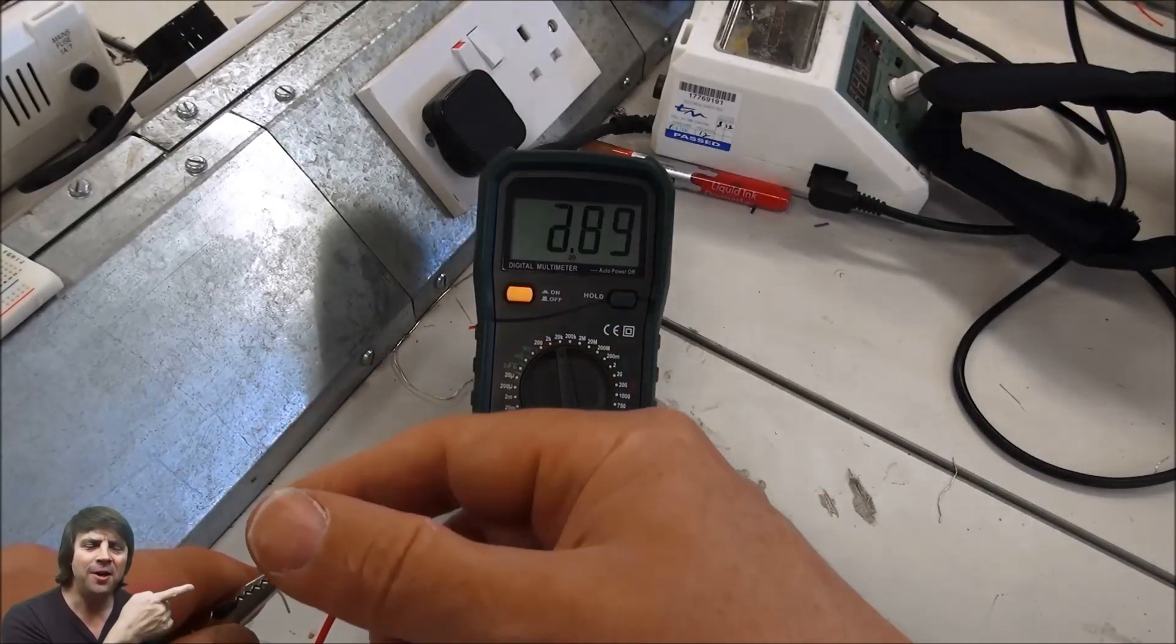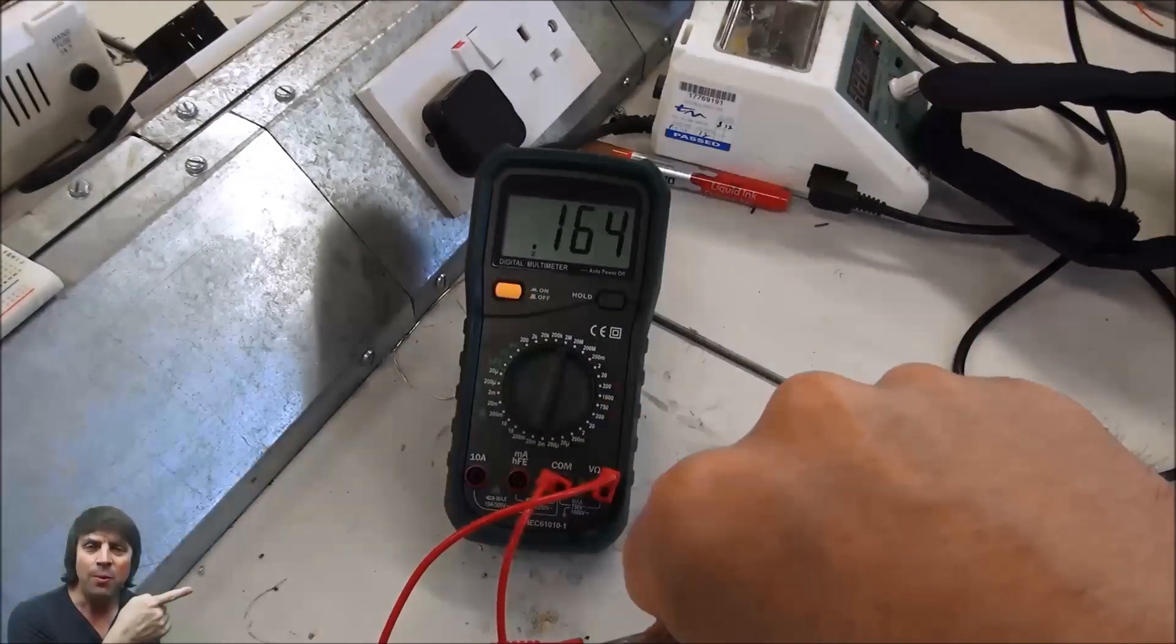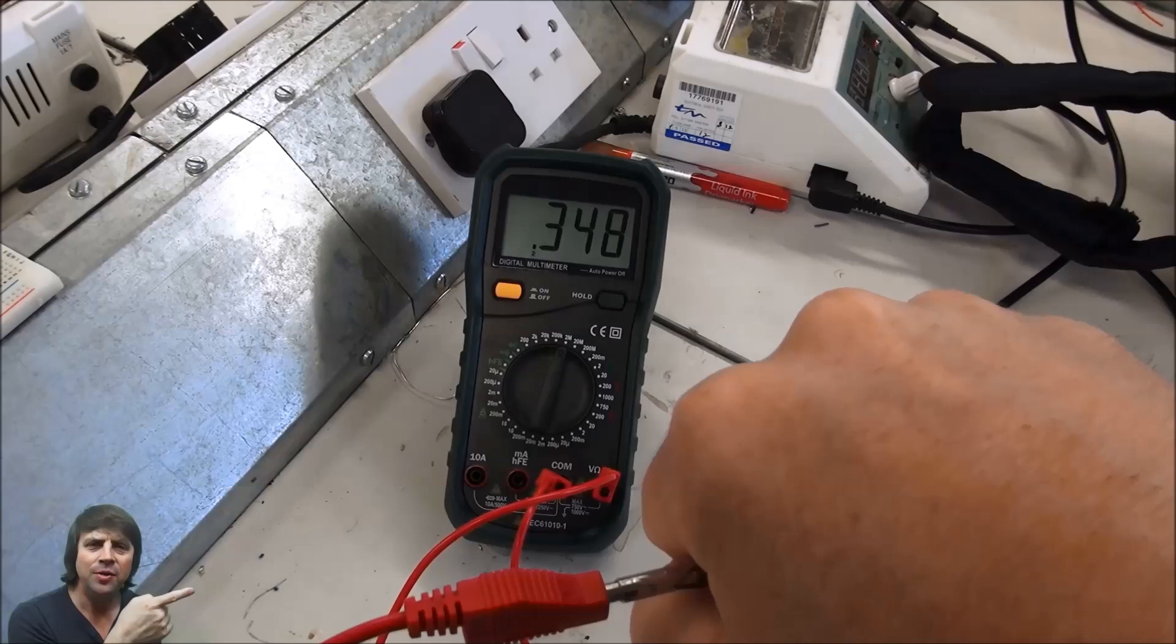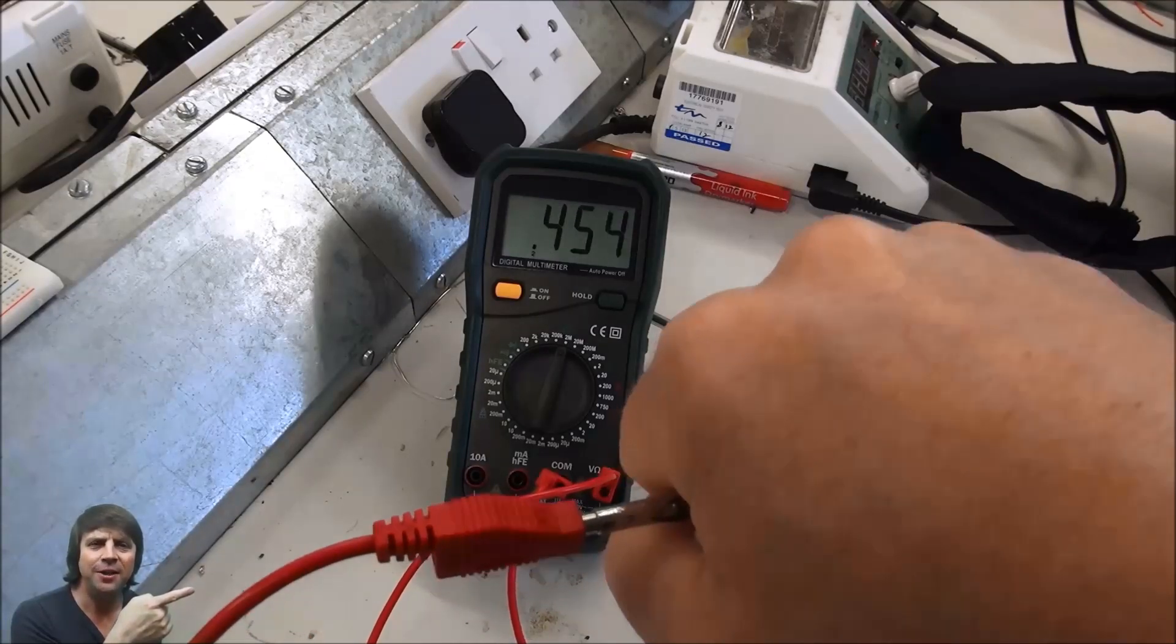You can see from the LDR that I'm using that its resistance changes from about 1k in a fully lit room to 500k when it's fully dark with my hand closed over it.